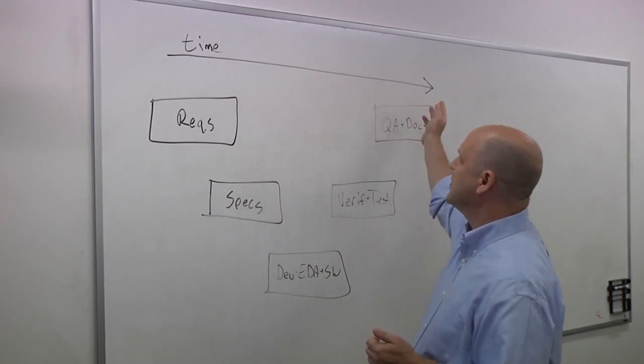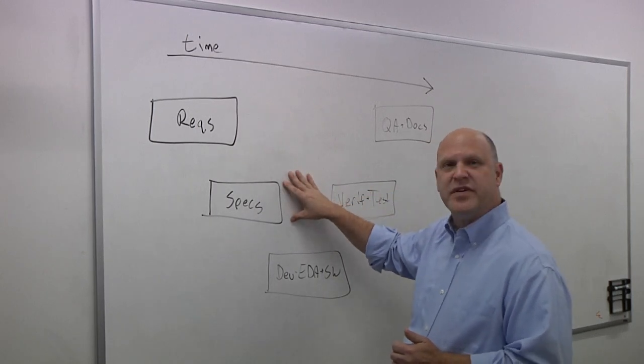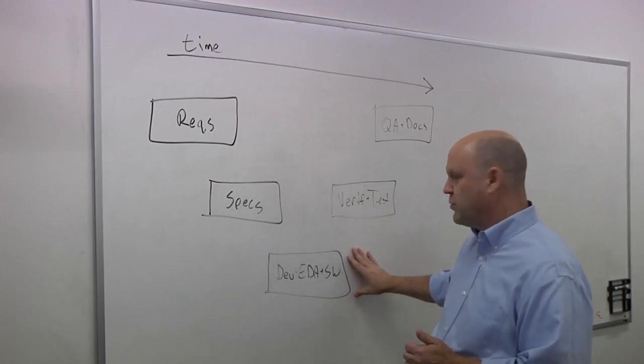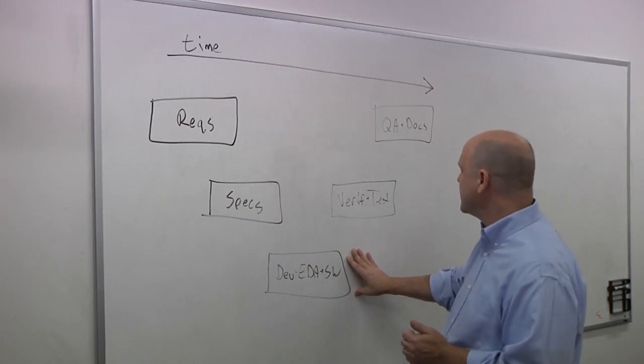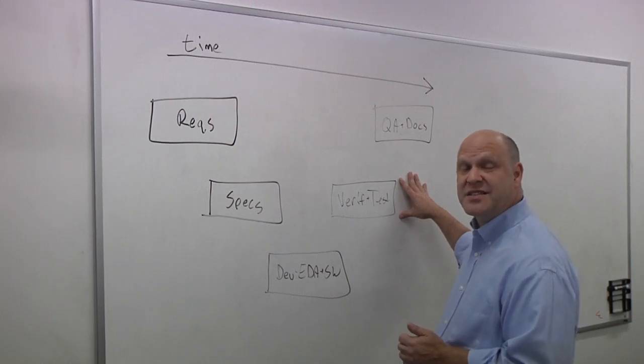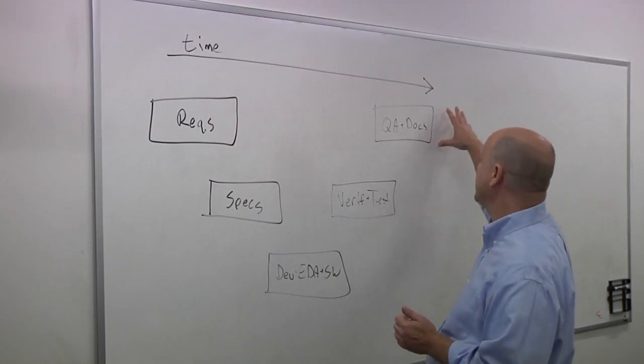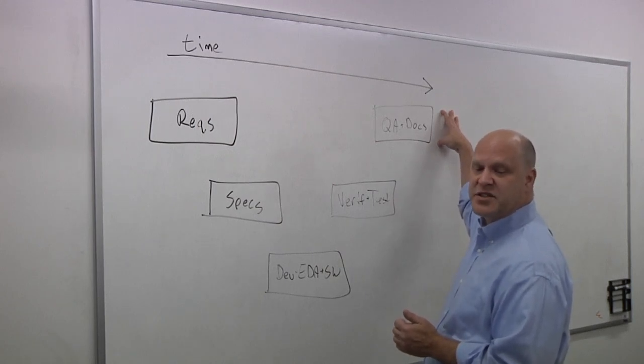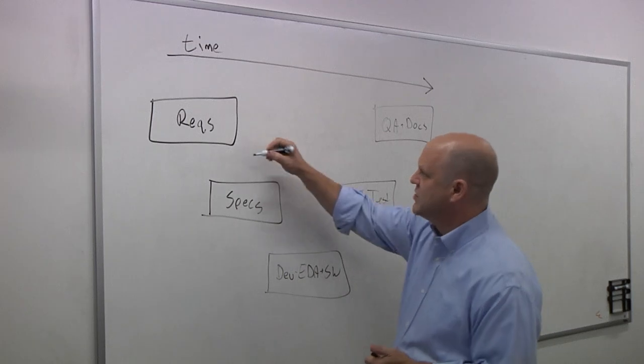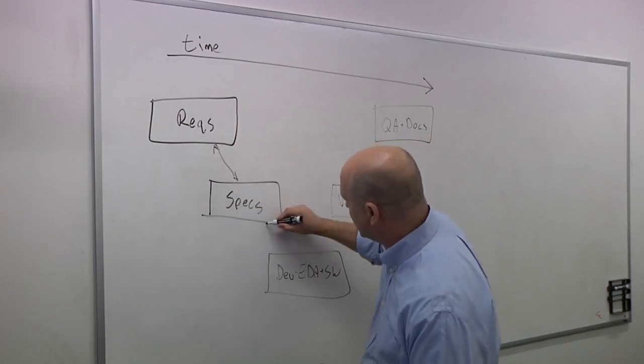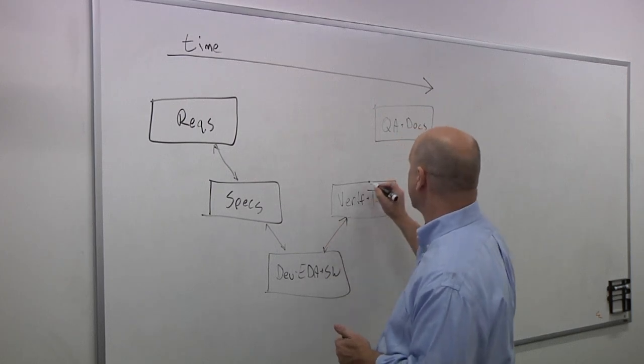And in time, if you look at it, we have some requirements. Those get built into specifications. The different hardware and software teams then use those specifications to design and implement their products. We do verification and test on those parts of the products and the product itself. And then we do QA and documentation.